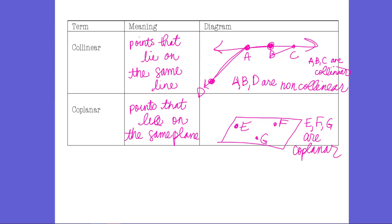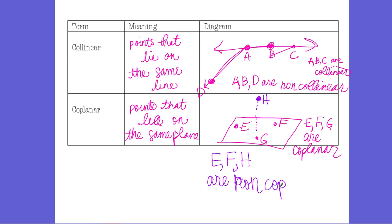But if I have a point H floating above my plane, E, F, and H are not all on the same plane — examples of non-co-planar points. To clarify: E, F, G, and H are not all on the same plane. There's no way to hit all four of those points with one plane, so they are non-co-planar.